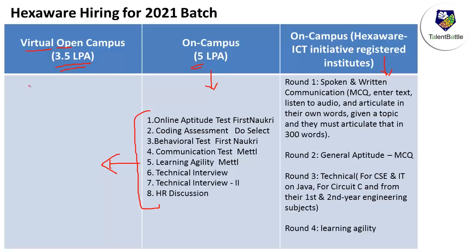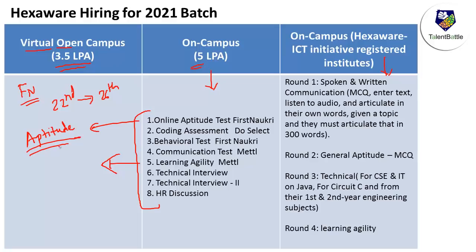For now, most of you have received mails from firstknockery.com to register for slots — some slots have shifted from the 22nd to the 26th. Since the first round is on firstknockery.com, there is a high chance it will be an aptitude test. Those who have applied for the open virtual campus should currently focus on aptitude. If they conduct the same process, the second round will be coding assessment, behavioral test, communication test, learning agility, and technical and personal interviews.